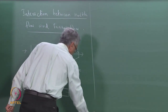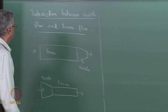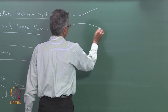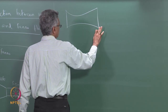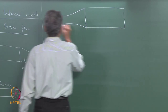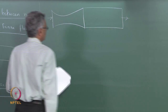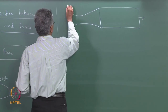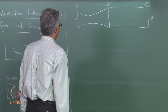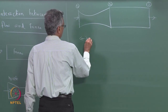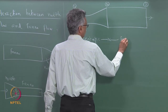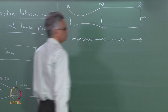Today we are going to look at the interaction between flow in a convergent-divergent nozzle and a duct. The situation we are looking at is a convergent-divergent nozzle which precedes a duct or pipe. We label the inlet as section 1, the nozzle exit as section 2, and the duct exit as section 3. The flow is isentropic in the nozzle part and we have Fanno flow in the duct.